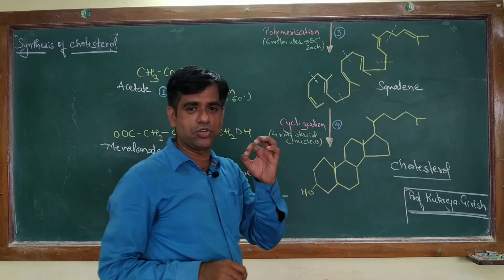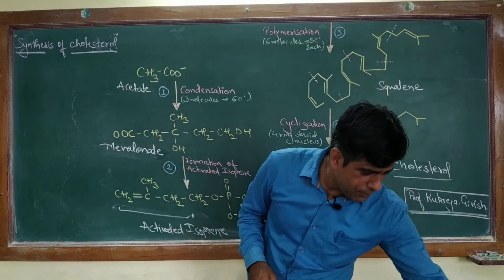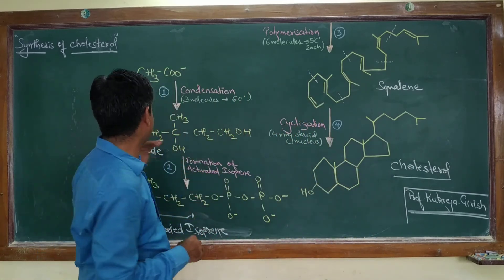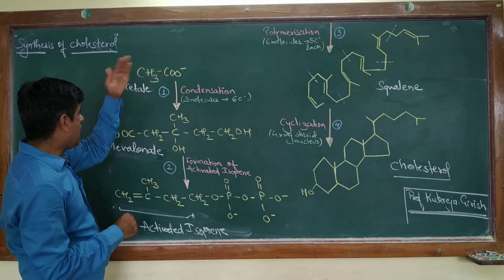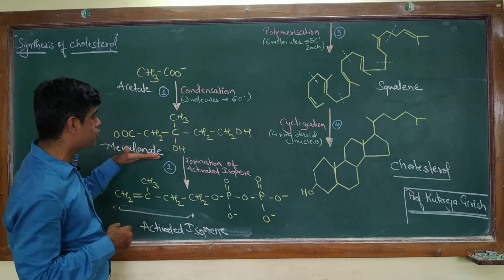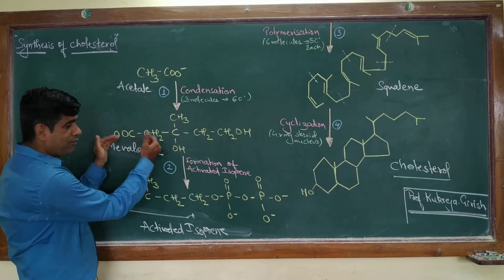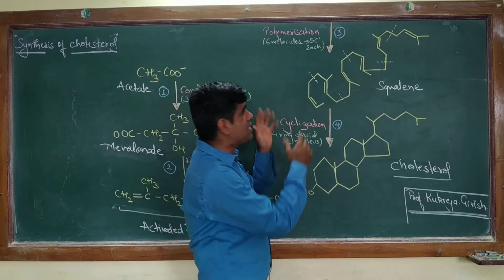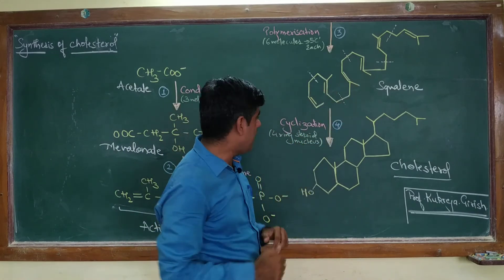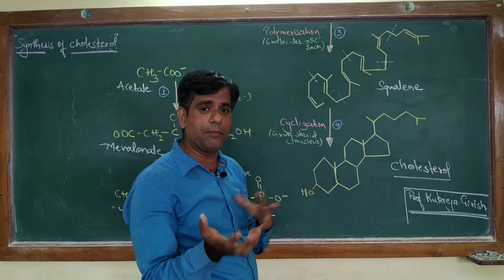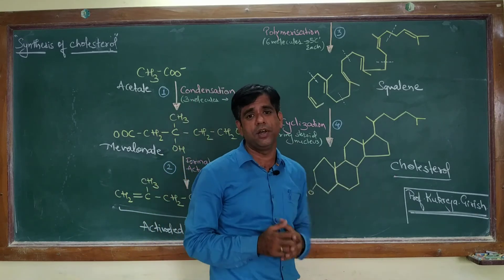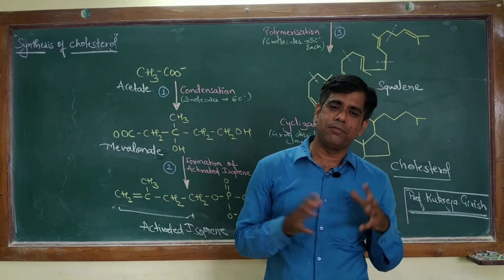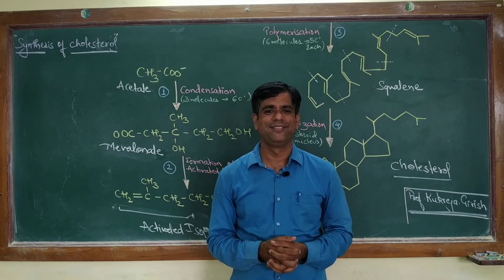To summarize, the biosynthesis of cholesterol occurs in four basic steps: first, condensation of three acetate molecules to form mevalonate; second, activation of mevalonate to form activated isoprene; third, polymerization of six isoprene units to form linear squalene; and fourth, cyclization with oxidation and removal and migration of methyl groups to form cholesterol. Stay tuned with me, Professor Girish Kukreja, for more in microbiology, biochemistry, and metabolism.